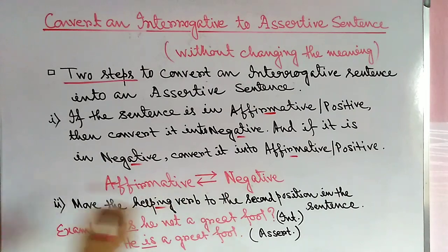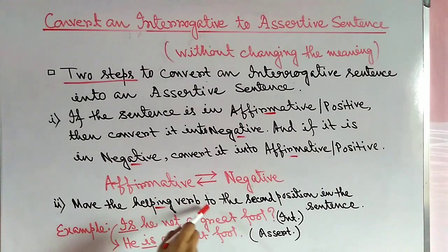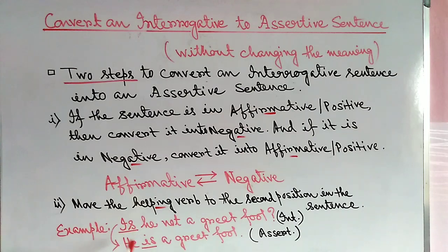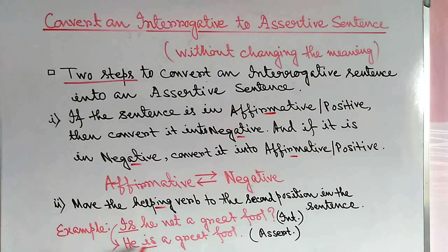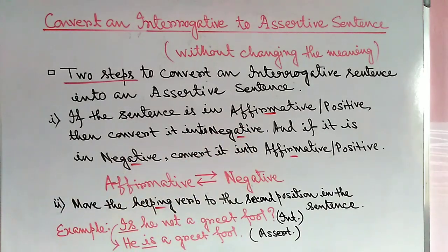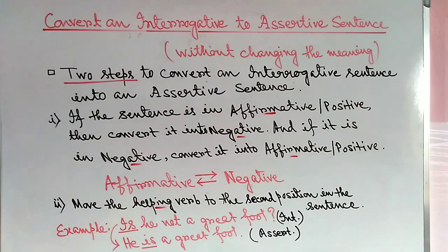Affirmative to negative, negative to affirmative. Step 2: move the helping verb to the second position in the sentence. For example: 'Is he not grateful?' — here 'is' is the helping verb. Following step two, we move the helping verb to second position: 'He is grateful.' Then following step one, since the interrogative is negative, the assertive becomes affirmative.